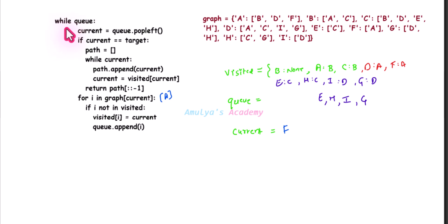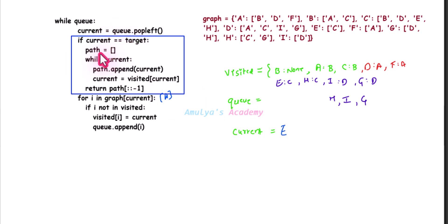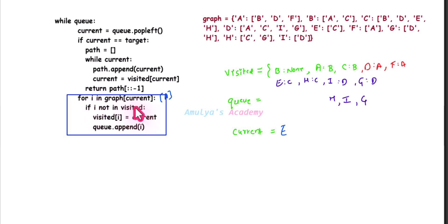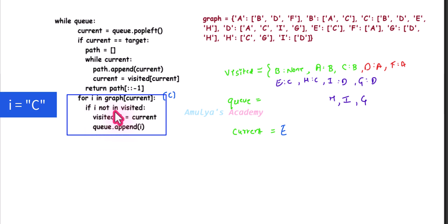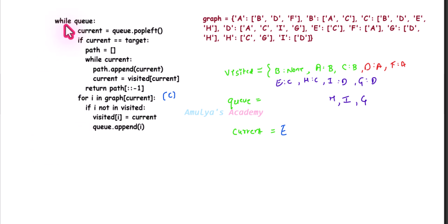Control goes back to the while loop — queue is not empty, current becomes E via queue dot pop left. If current is target — no. For I in graph of E: graph of E is C. I becomes C, but C is already present in the visited dictionary, so it won't execute the if body. No more adjacent nodes, control comes out of the for loop.